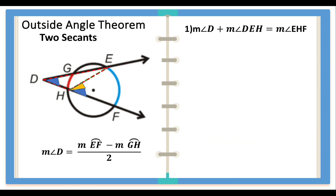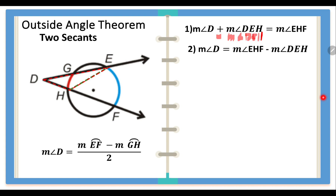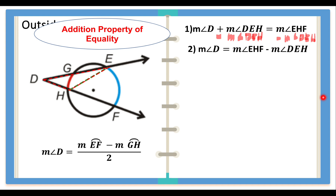Taking a look at statement number one, we simplify it to solve for the measure of angle D by subtracting the measure of angle DEH from both sides. We then arrive at: the measure of angle D is equal to the measure of angle EHF minus the measure of angle DEH. What allowed us to do that? The addition property of equality.